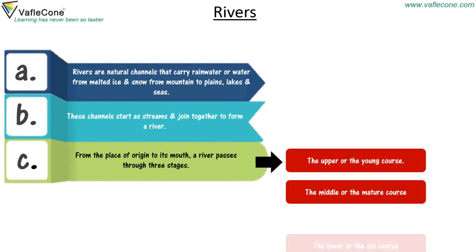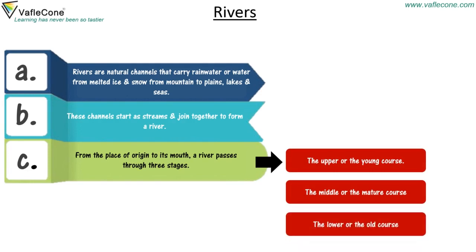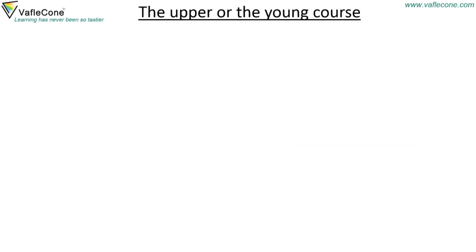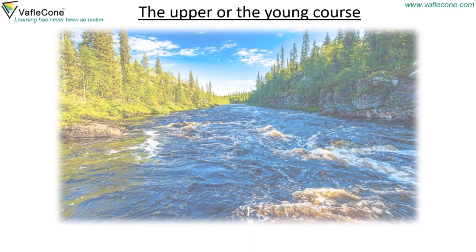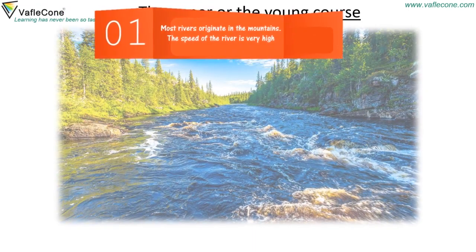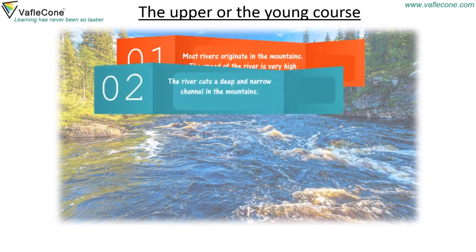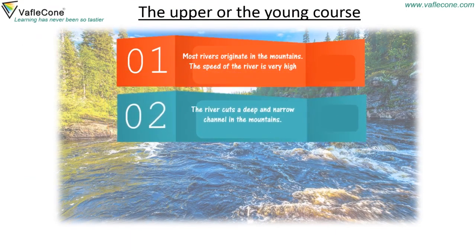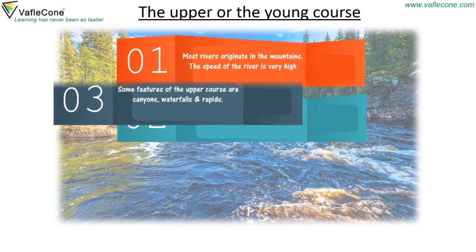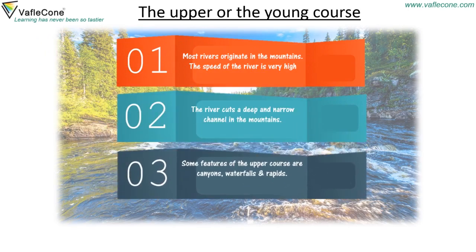The upper or young course: Most rivers originate in the mountains. The speed of the river is very high. The river cuts a deep and narrow channel in the mountains. Some features of the upper course are canyons, waterfalls, and rapids.